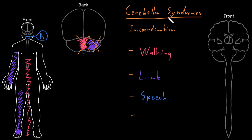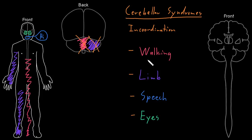With cerebellar dysfunction, we can also see in-coordination of the muscles that move the eyes. There are a number of small muscles that move the eyes so that we can look at what we want to look at. If there's a problem with the cerebellum, those muscles are often in-coordinated. There are other abnormalities of eye movements that can occur with cerebellar dysfunction, but those details are a bit complicated, so I'll save them for later.